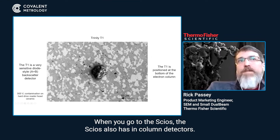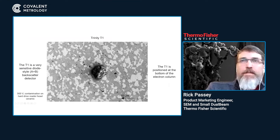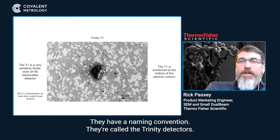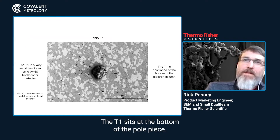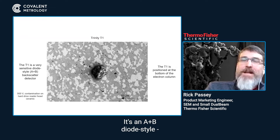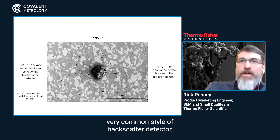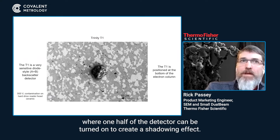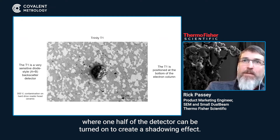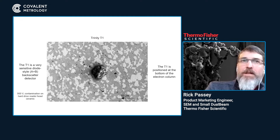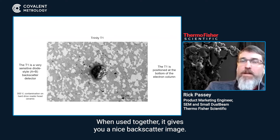When you go to the SIOS, it also has in-column detectors with a naming convention — they're called the Trinity detectors. The T1 sits at the bottom of the pole piece. It's an AB diode style, a very common style of backscatter detector where one half of the detector can be turned on to create a shadowing effect, but when used together it gives you a nice backscatter image.